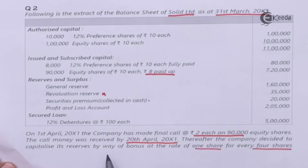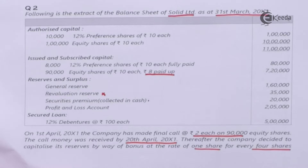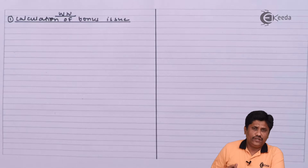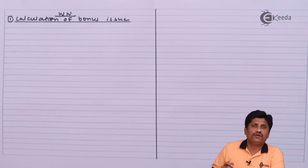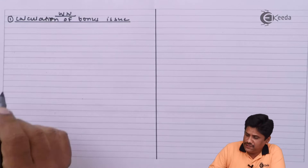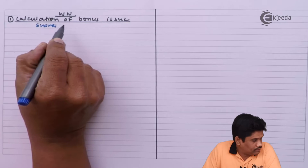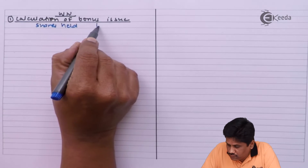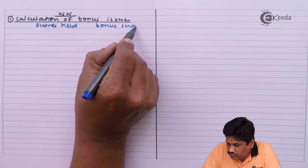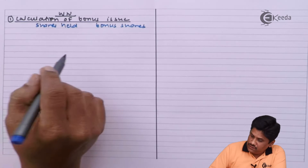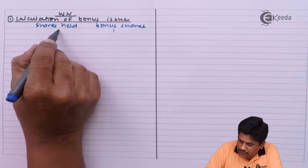Thereafter, the company decided to capitalize the reserve by issue of bonus shares at the rate of one share for every four shares held. I will do a small working note for deciding the amount of bonus. Calculation of bonus issue: when you are issuing bonus shares, your calculation will be according to the number of shares held, and how many bonus shares will be received. The ratio is one share for every four shares held.